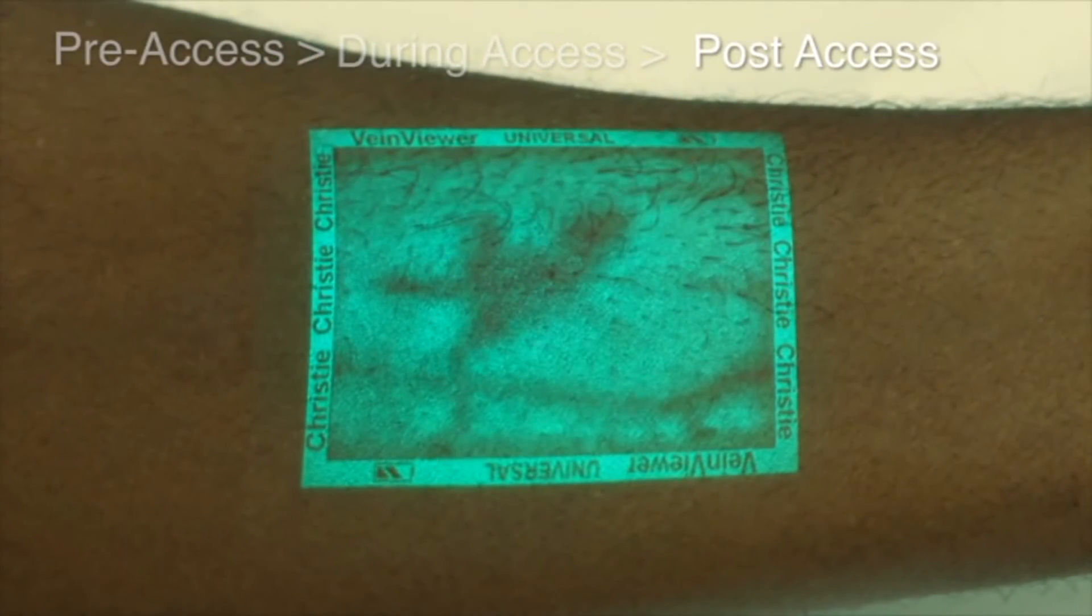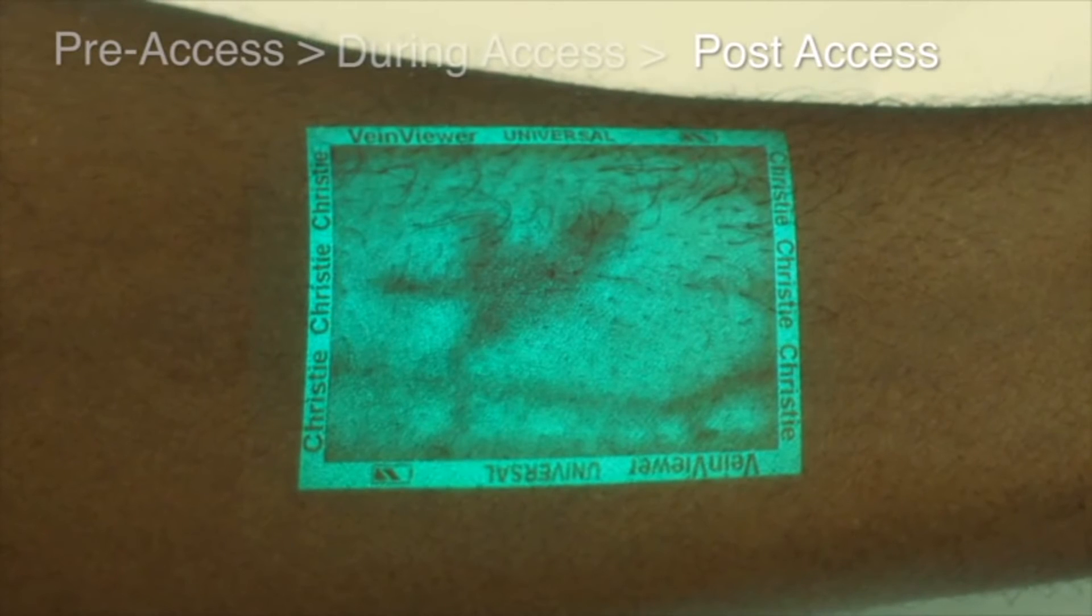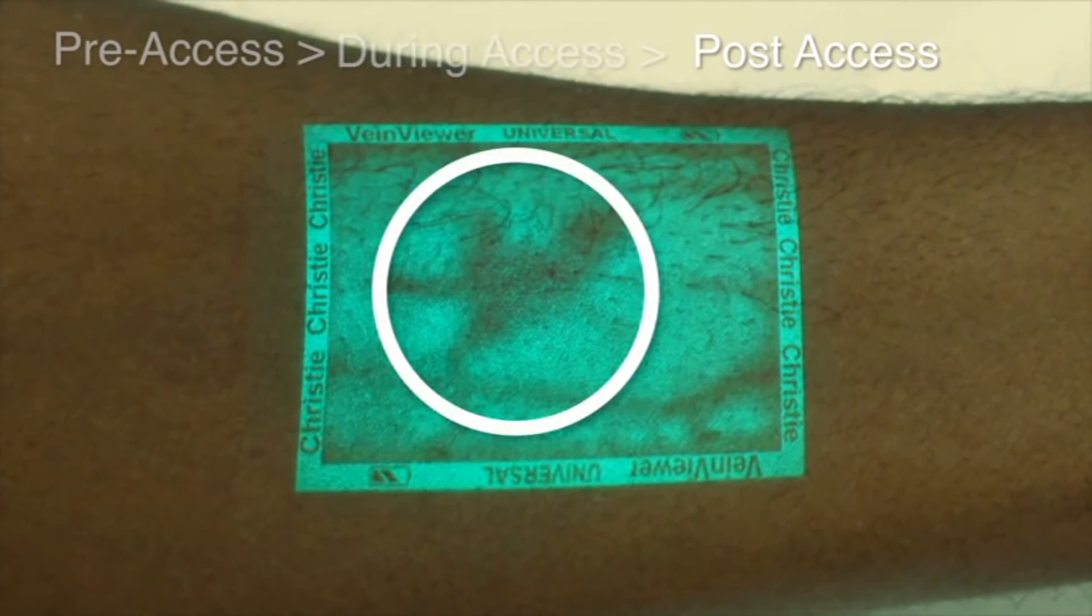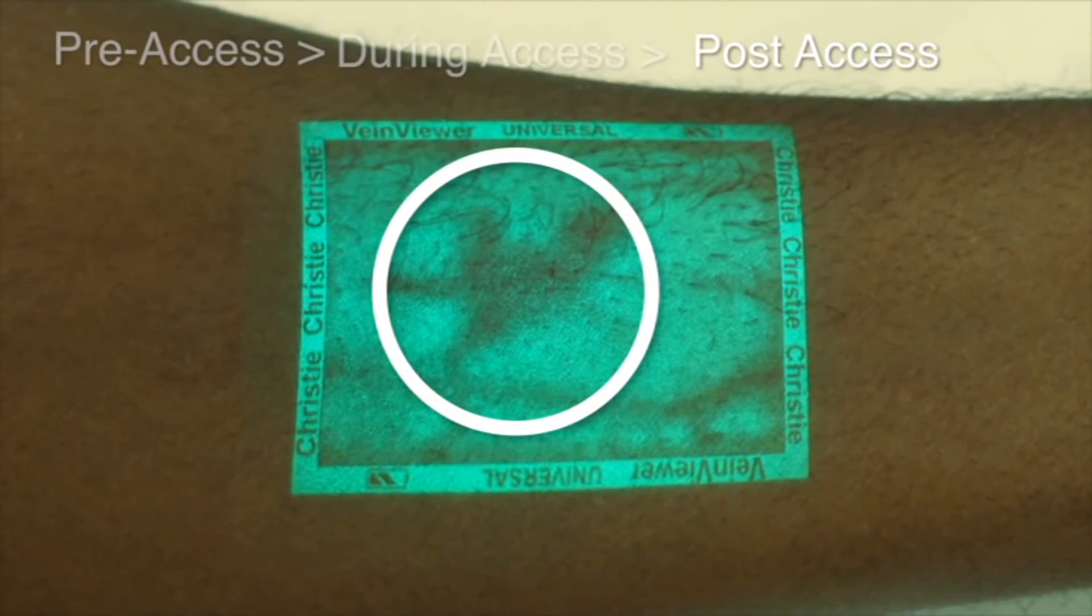Post access, VeinViewer is the only vein illumination device that can help you recognize a hematoma forming from a burst or punctured vessel, giving you the information you need to take action and potentially prevent additional complications.